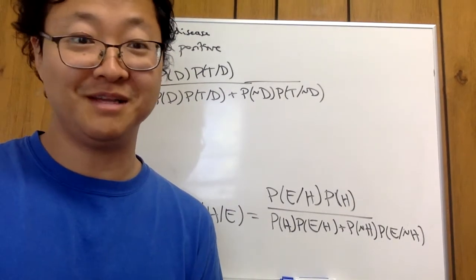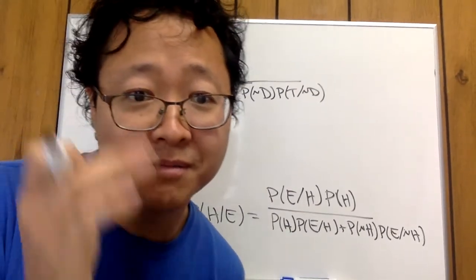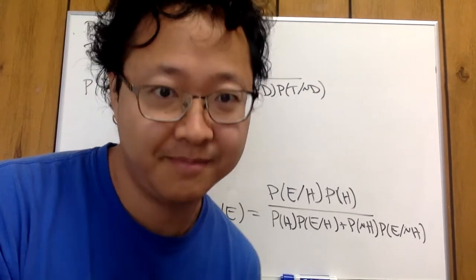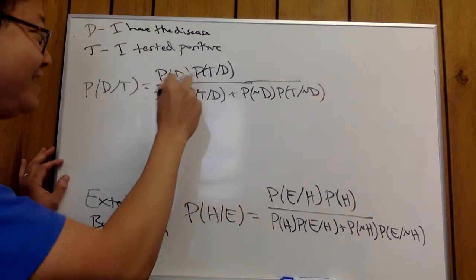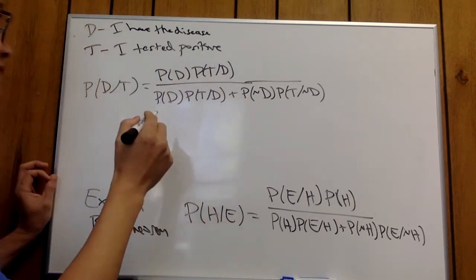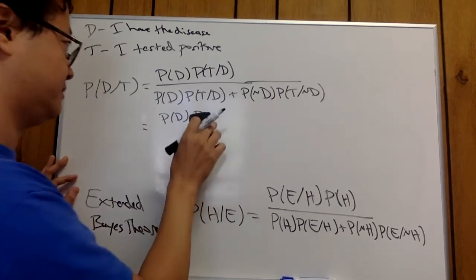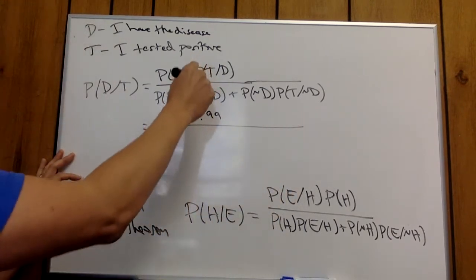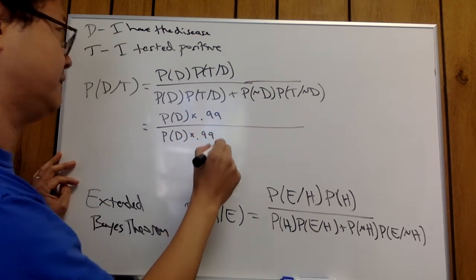Let's start filling in the blanks. The problem says the test 99% of the time correctly says you have the disease if you have it — so that's giving us P(T|D), the probability that you'll test positive given that you have the disease, which is 0.99. So we have probability of D times 0.99, divided by probability of D times 0.99 plus...